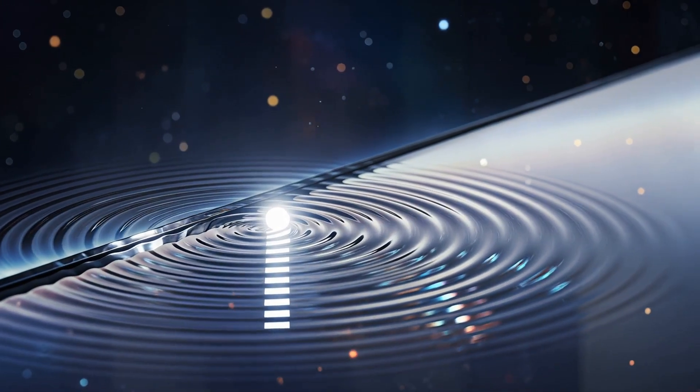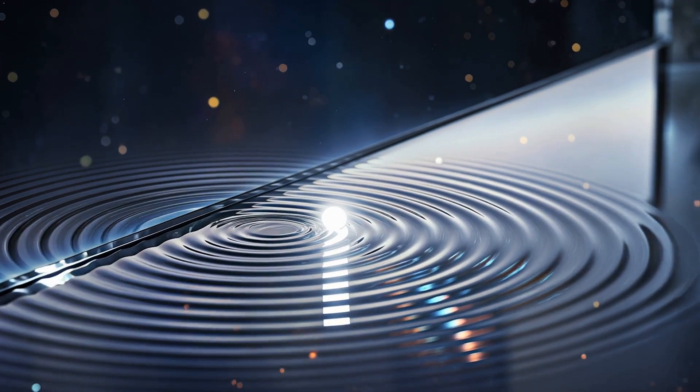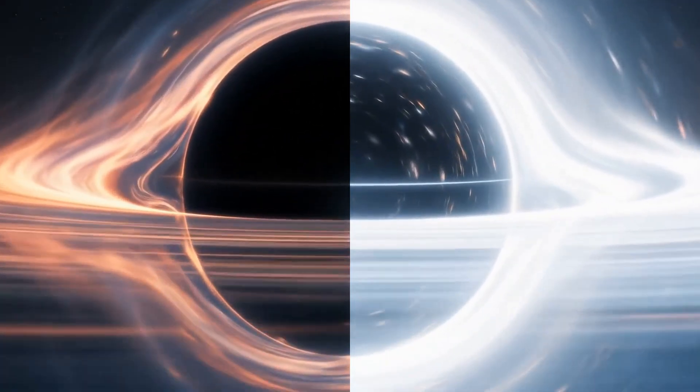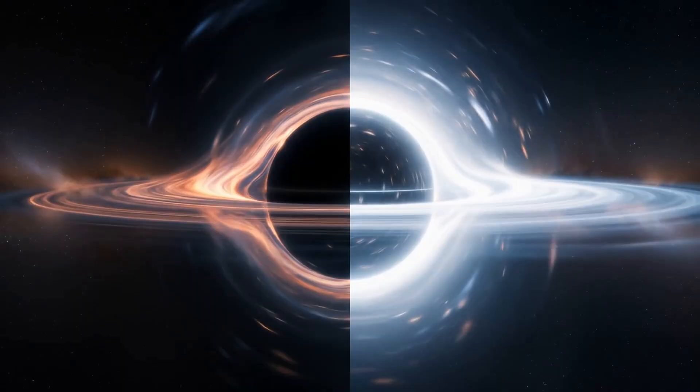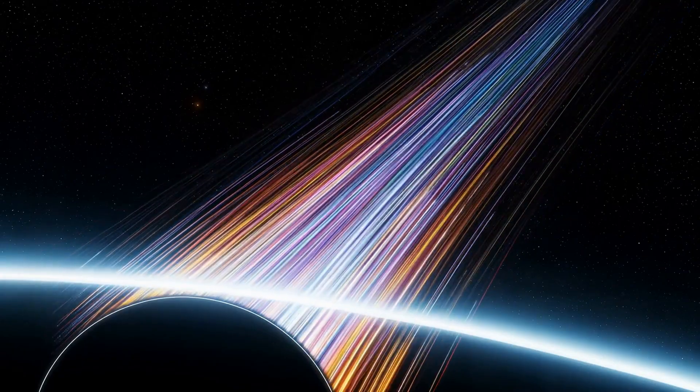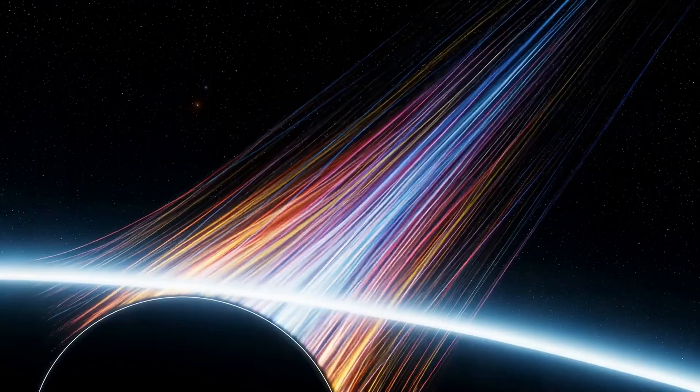The singularity and the event horizon are entangled reflections of each other, like watching a movie in a mirror. The singularity is pure slope, the derivative. The horizon is the accumulated form, the integral. Entanglement carries the information across the mirror, locking inside and outside together.